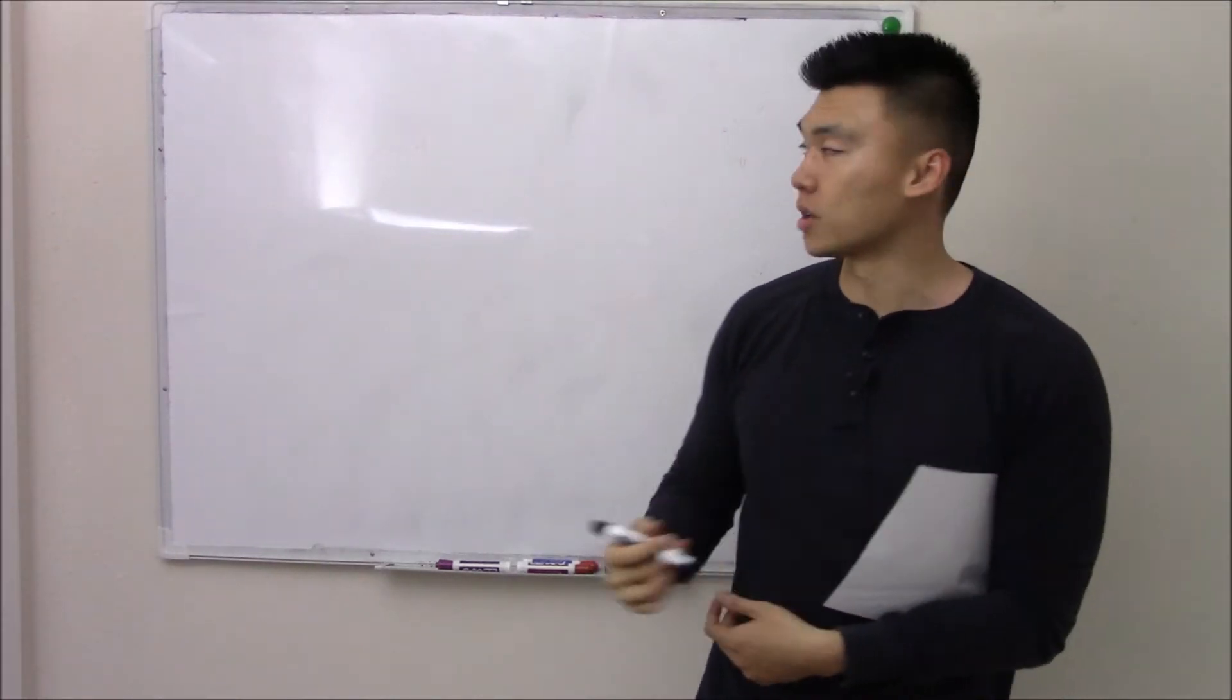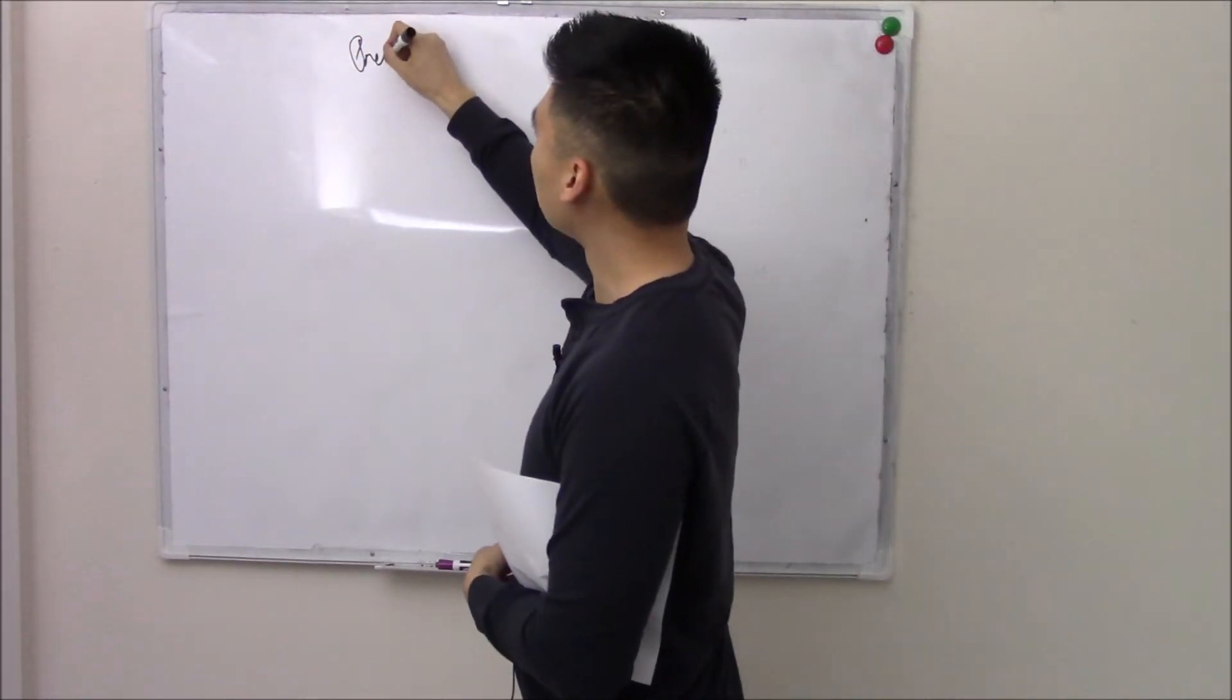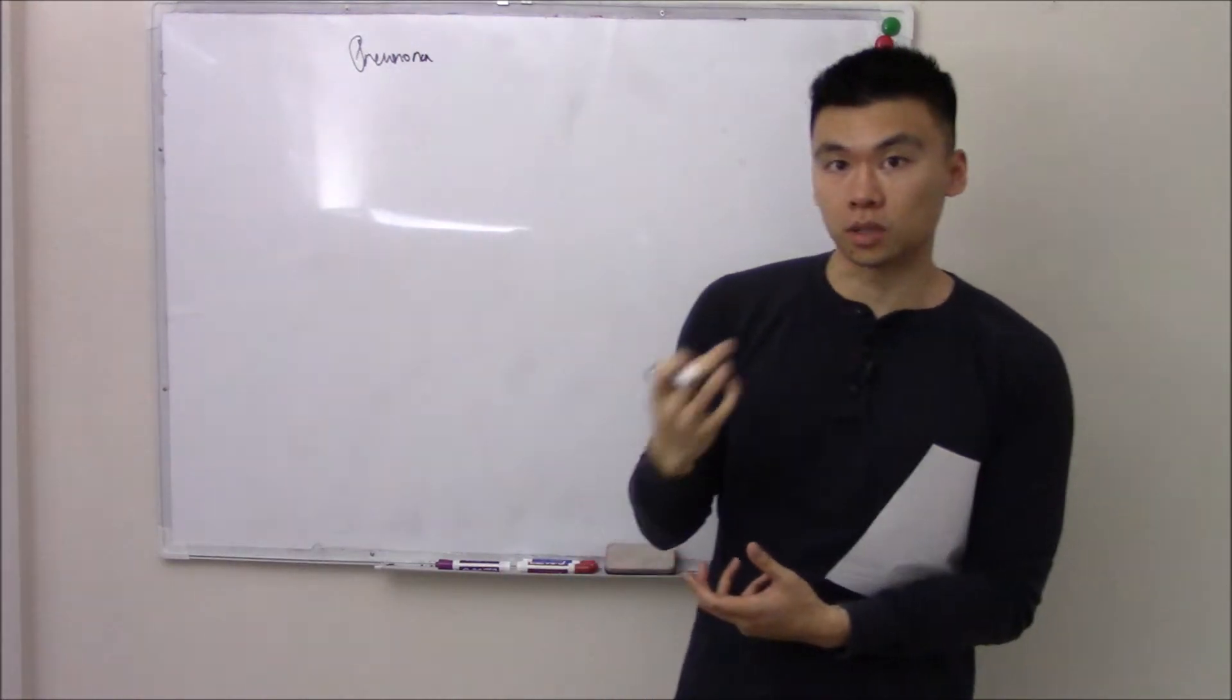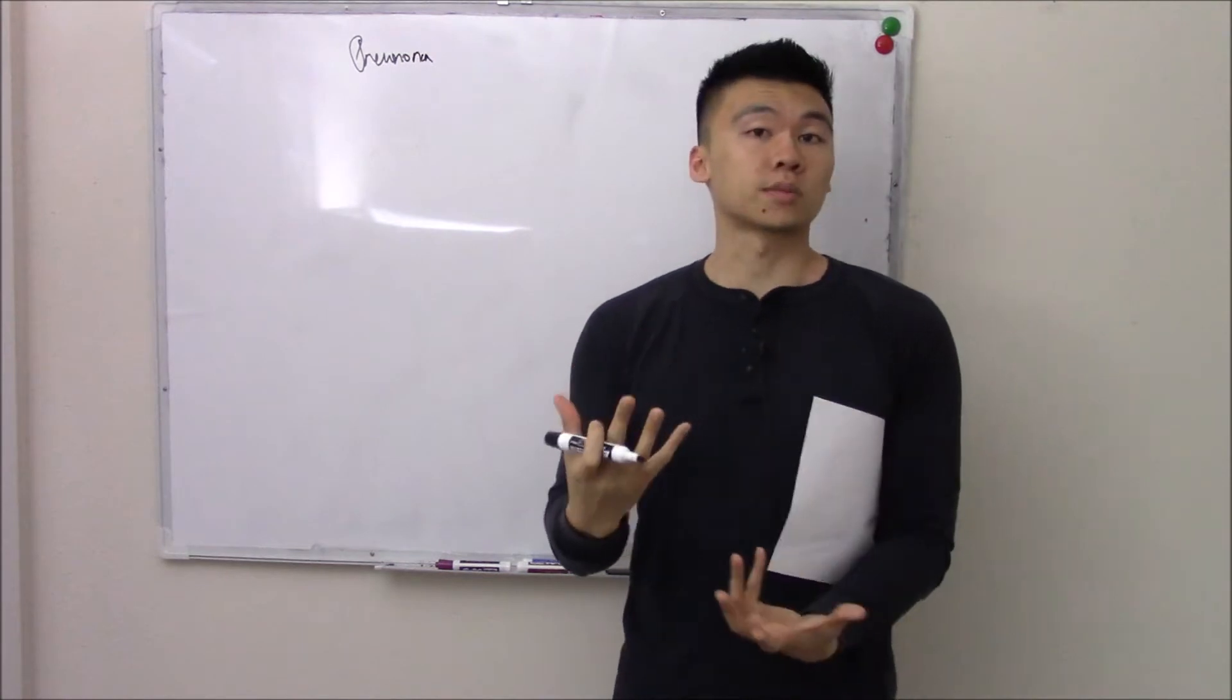This video is on lung infections or pneumonia. Pneumonia is infection of your lung parenchyma. Parenchyma means functional tissue. What's the functional unit tissue of your lungs? It'd be your respiratory zone.